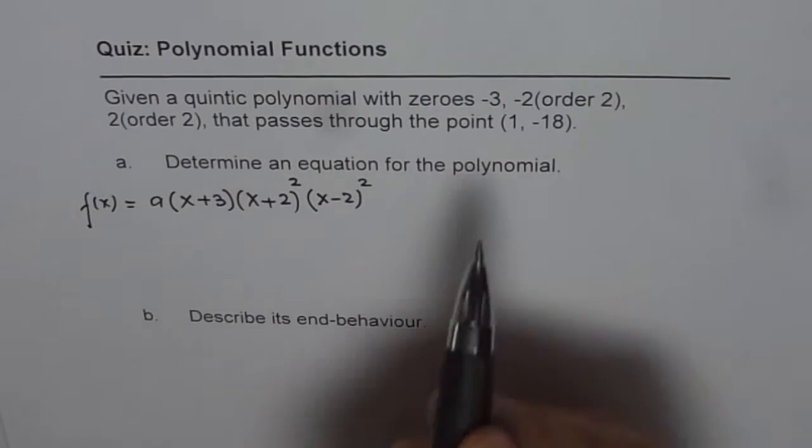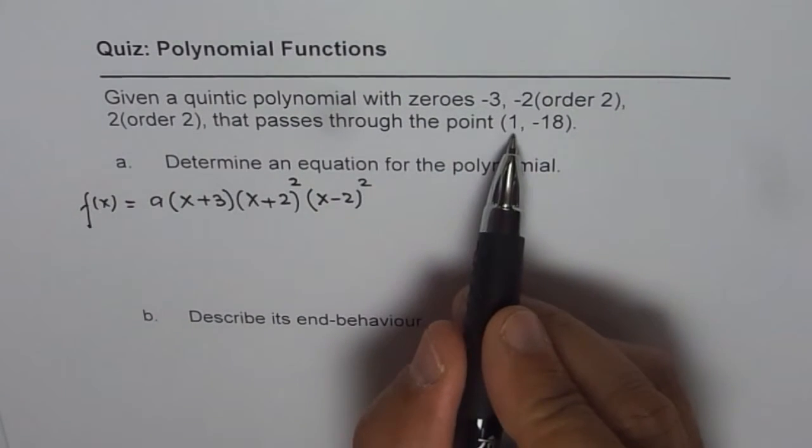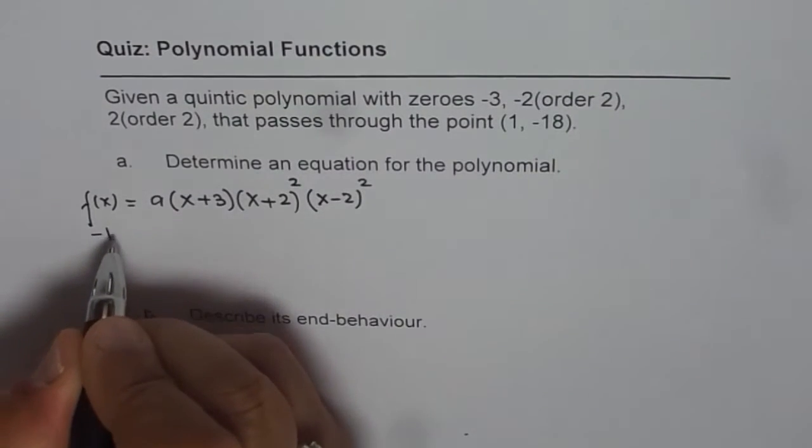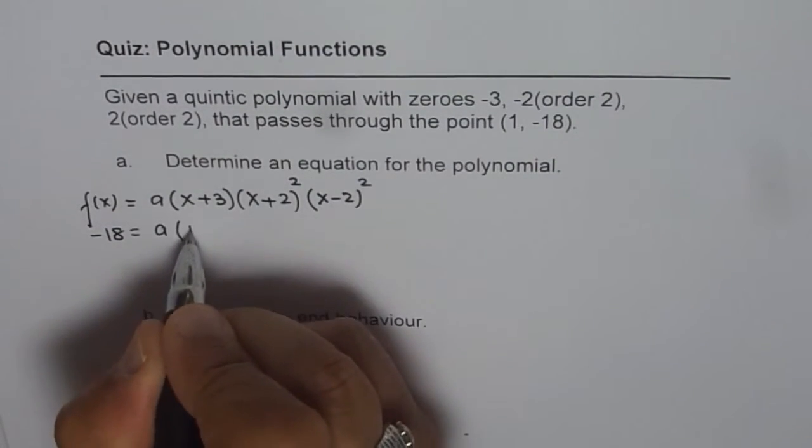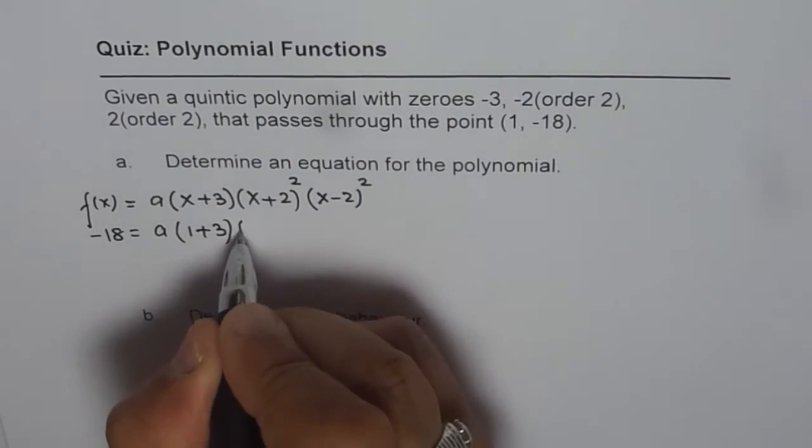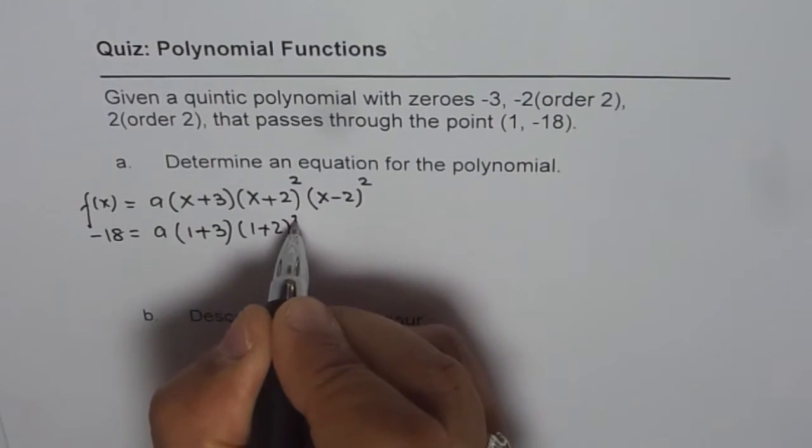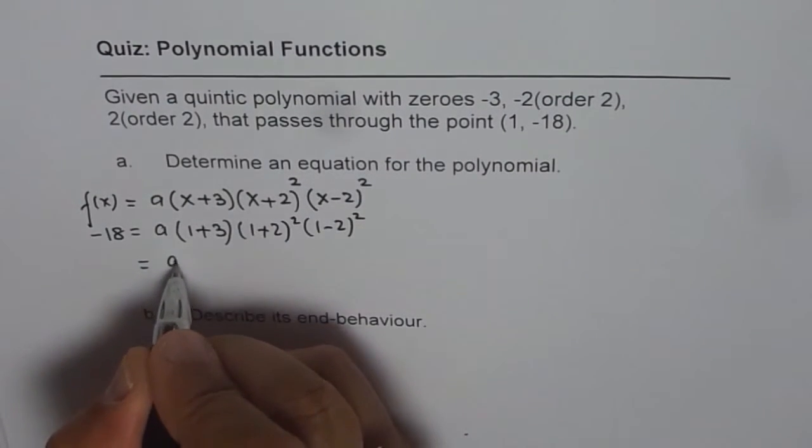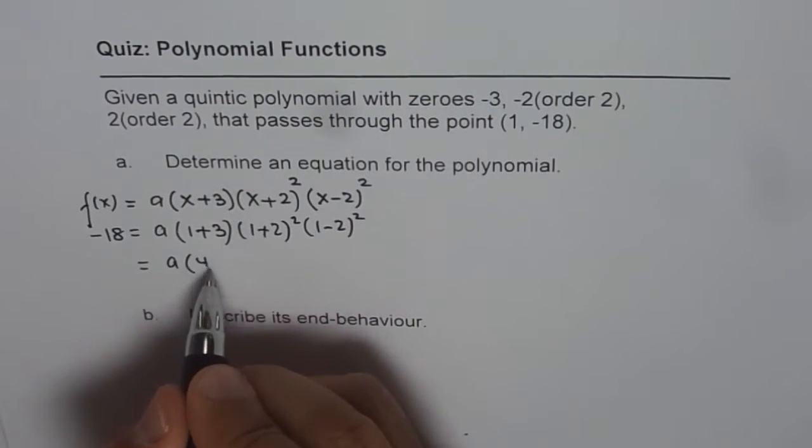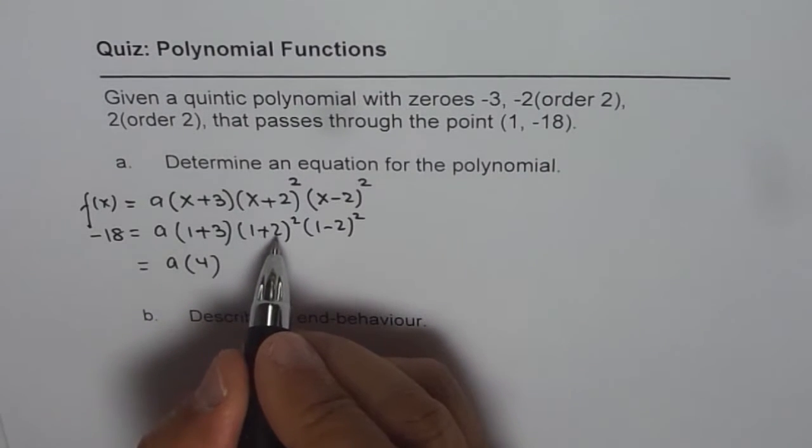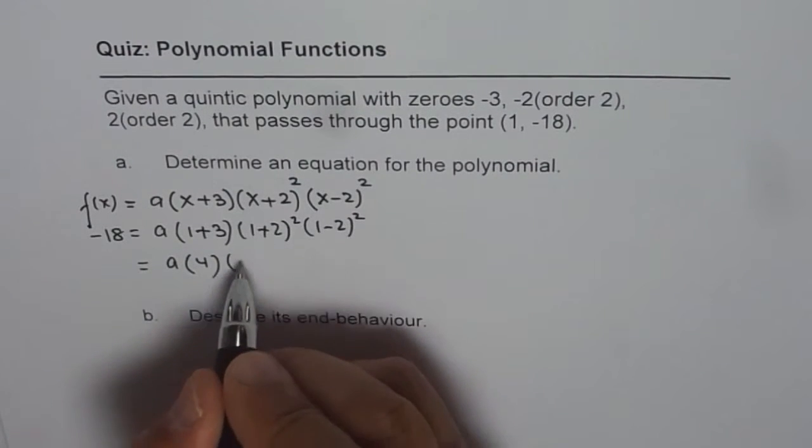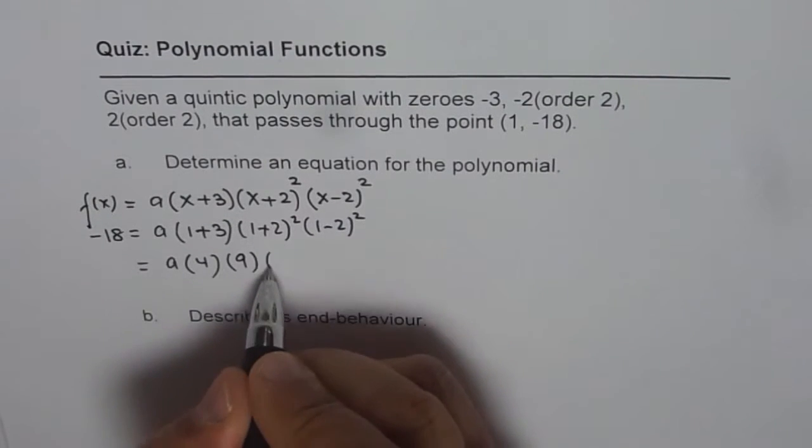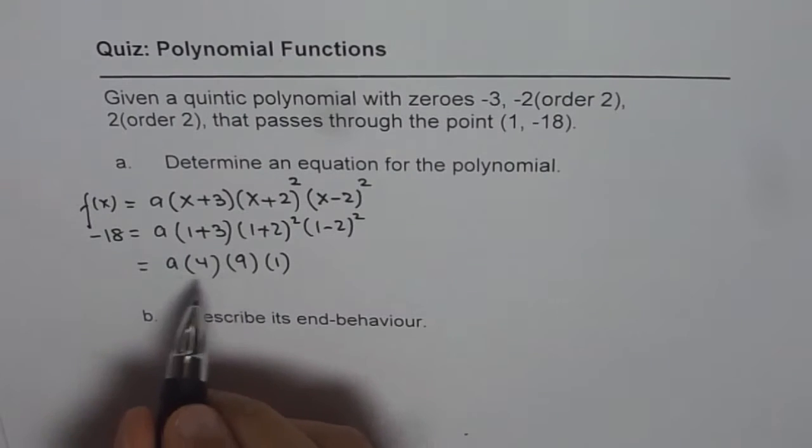Now to find the value of a, we can substitute x as 1 and f(1) as minus 18. So we get -18 equals to a times (1 plus 3)(1 plus 2)²(1 minus 2)². That gives us a times, 1 plus 3 is 4, 1 plus 2 is 3, 3 squared is 9, and 1 minus 2 is minus 1, and the square of minus 1 is 1.